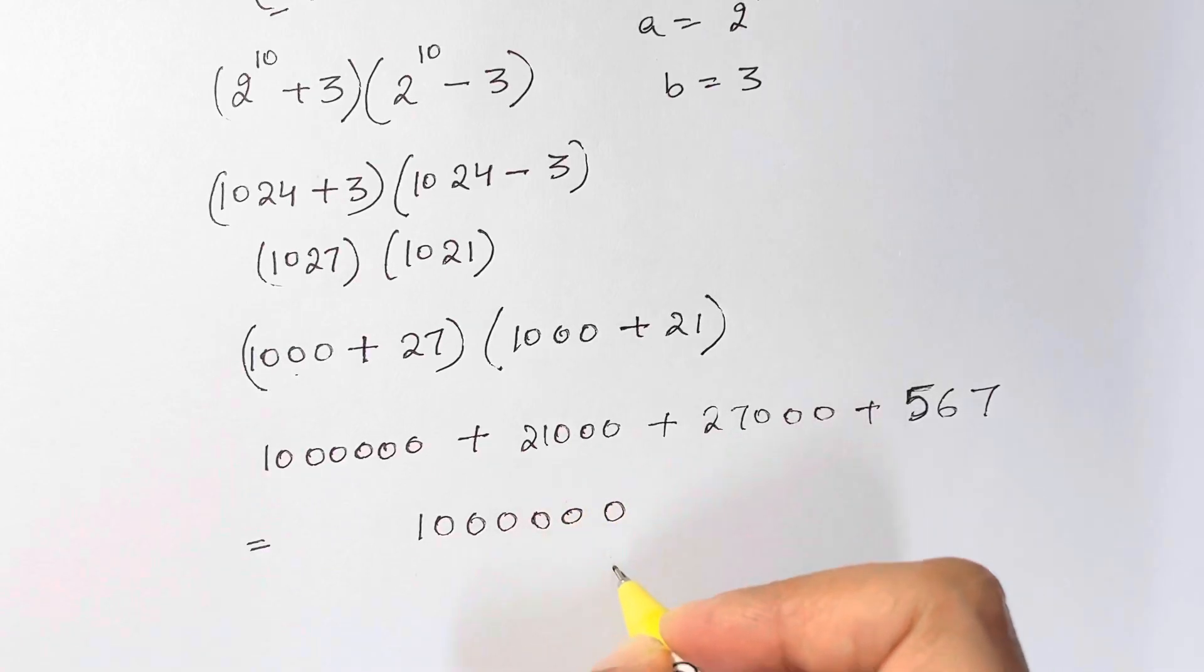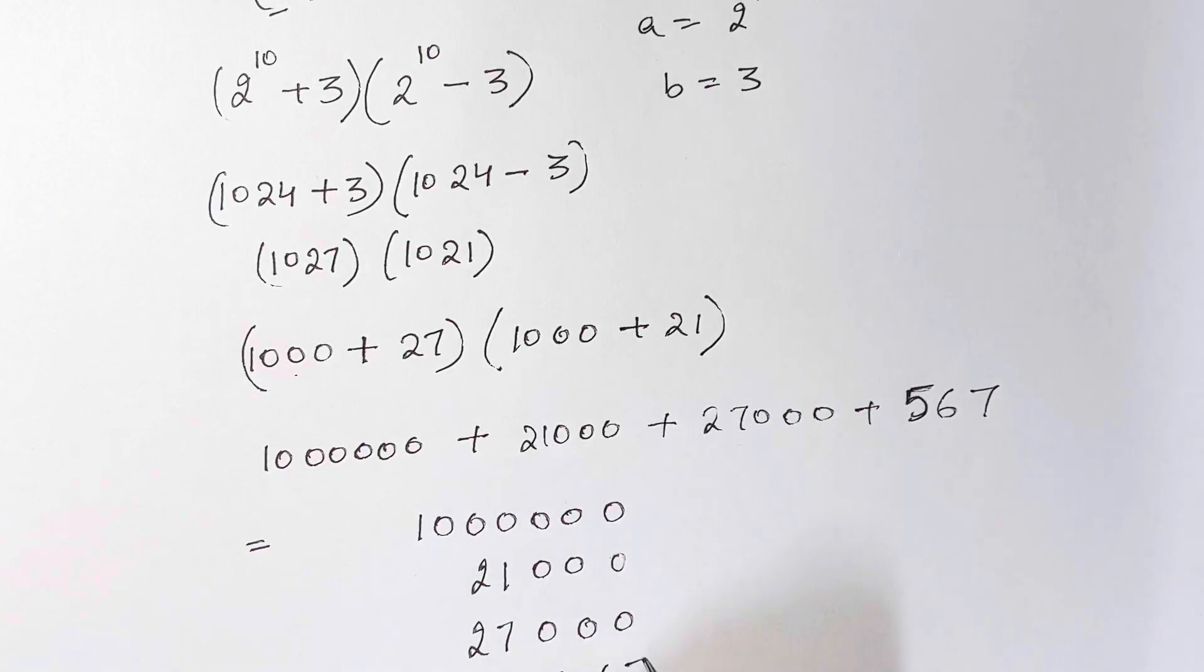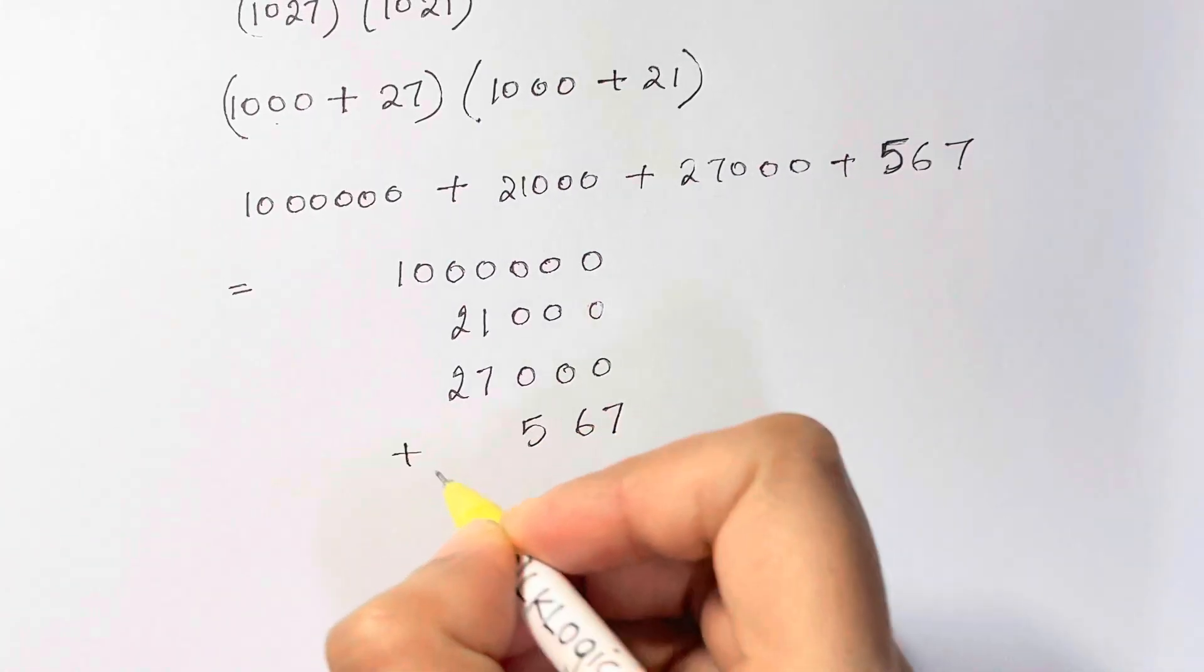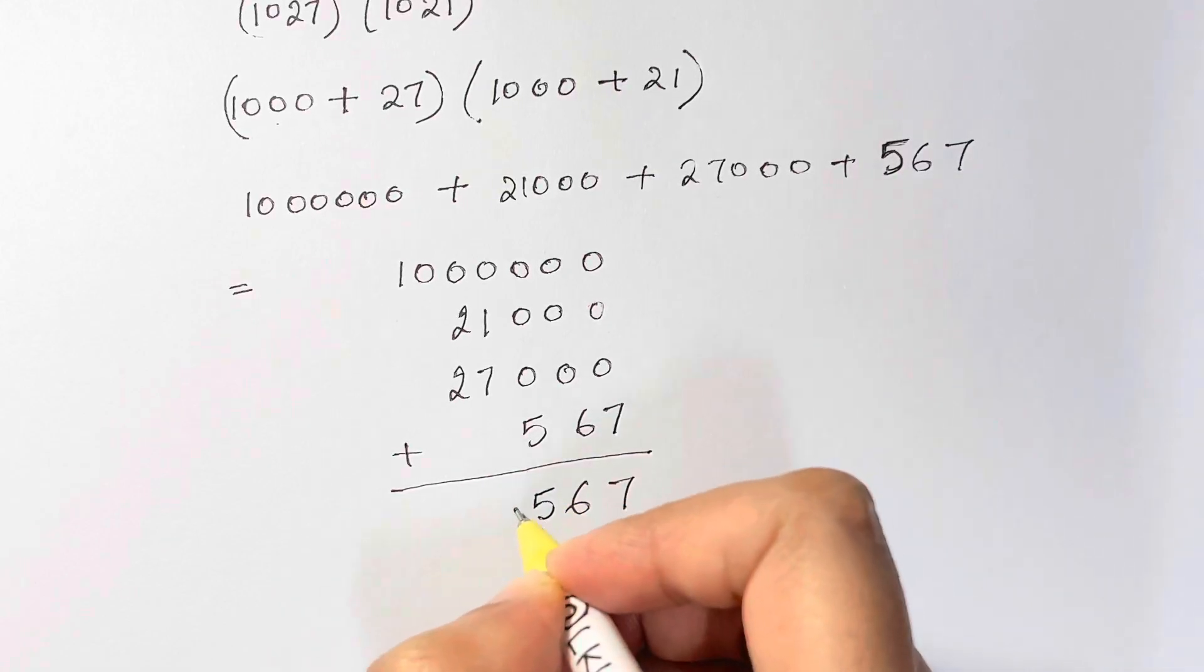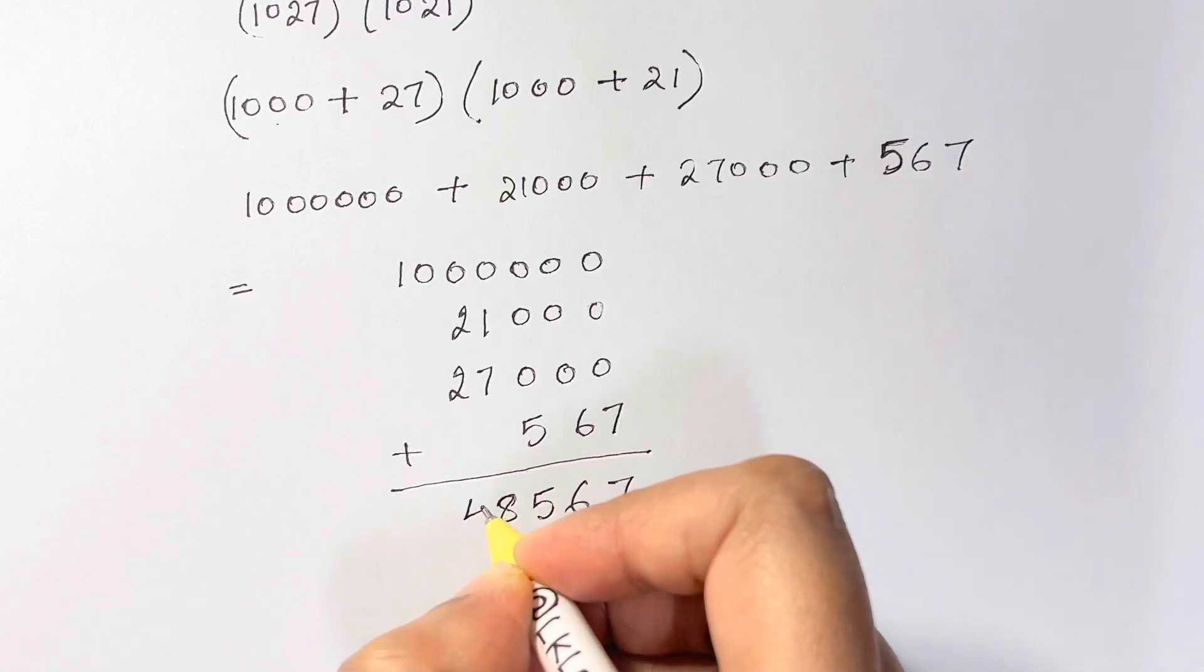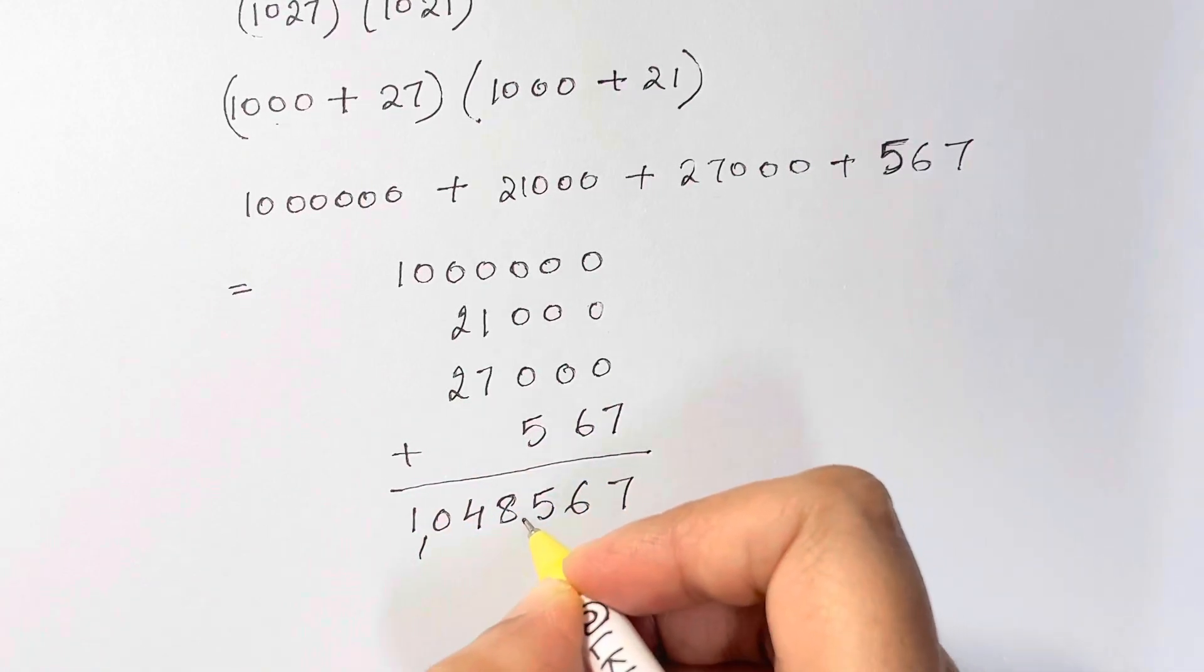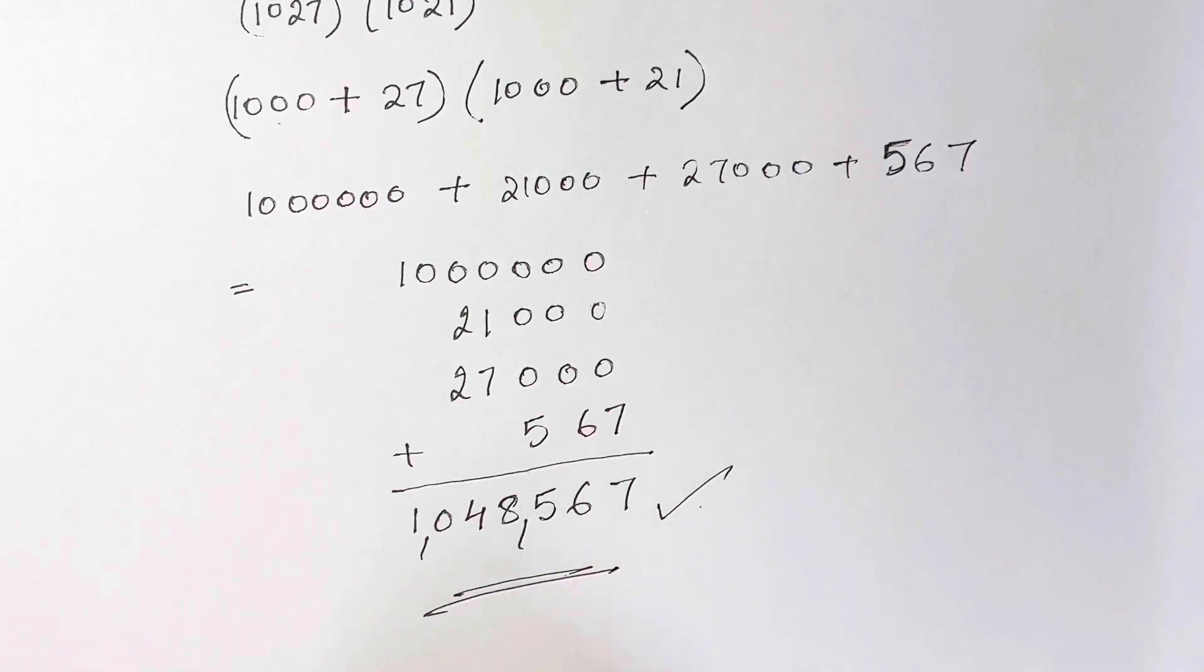Now let's add them all together. We have a million here, and then 21000, then 27000, then 567. So let's just add them up all together. So we have 7, 6, 5 here, we have 8, 4, 0, 1. So we have 1048567 as the answer.